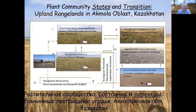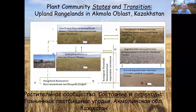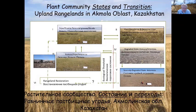We can see this in some of the virgin land program areas that were broken out of rangelands, planted in wheat, and then abandoned. Thirty and forty years later, you still see a stunted plant community that hasn't returned totally to the historic plant community.